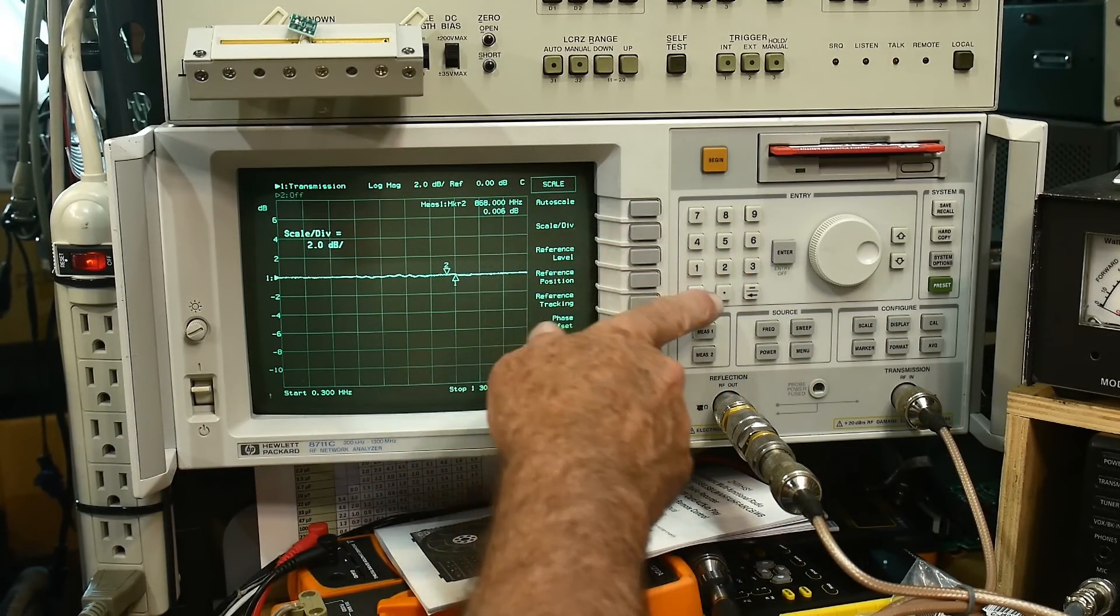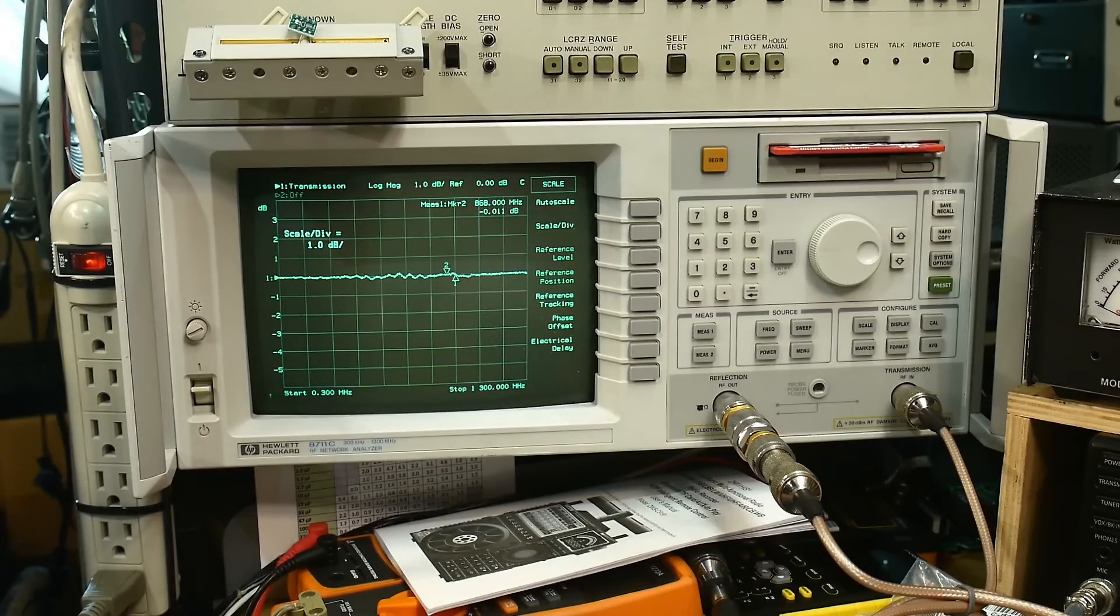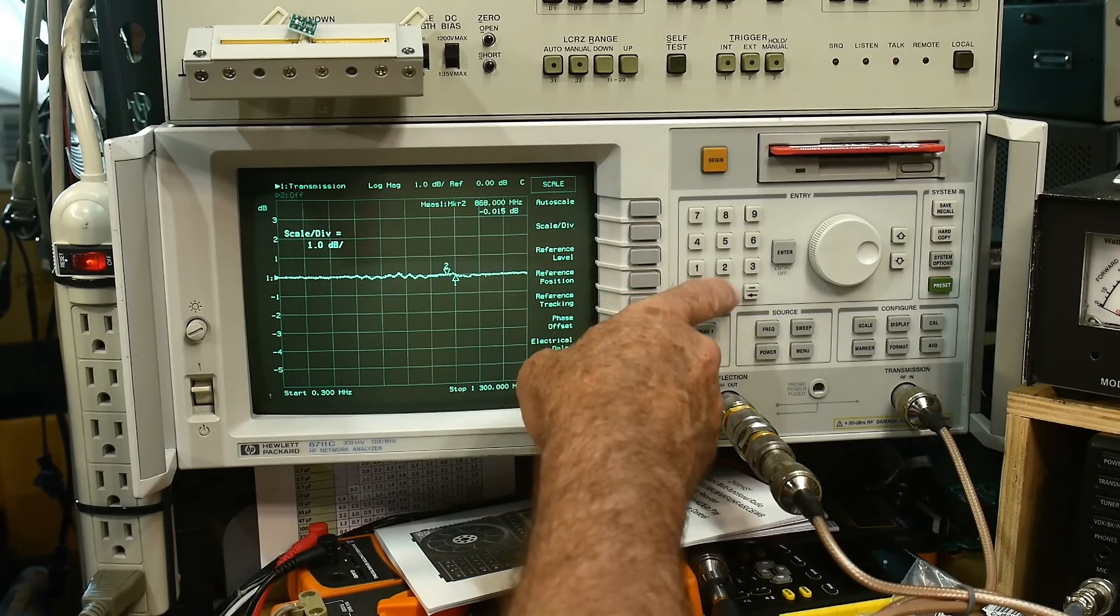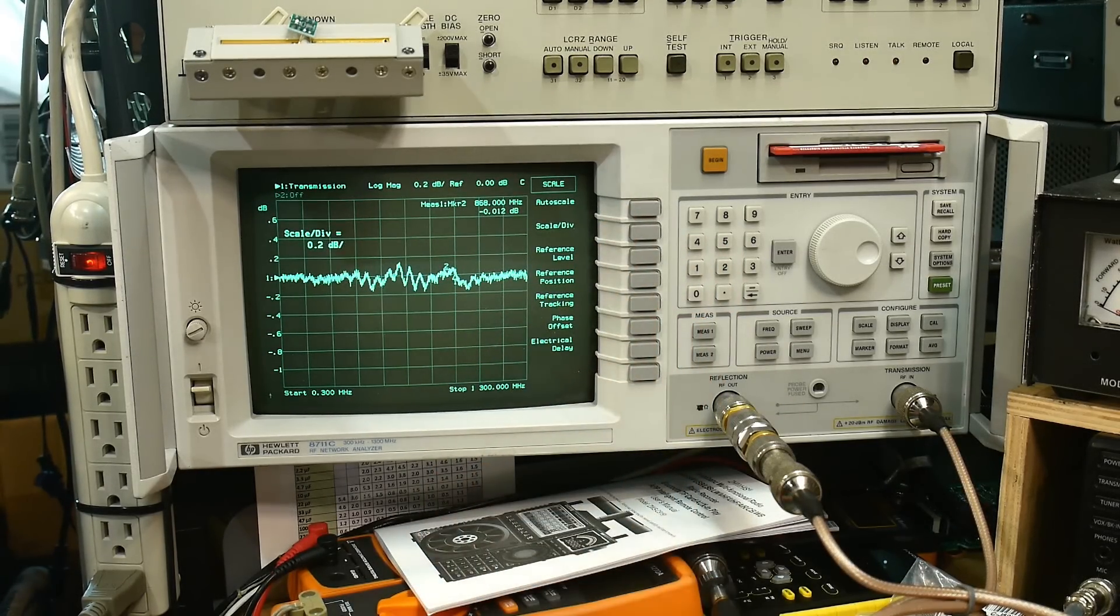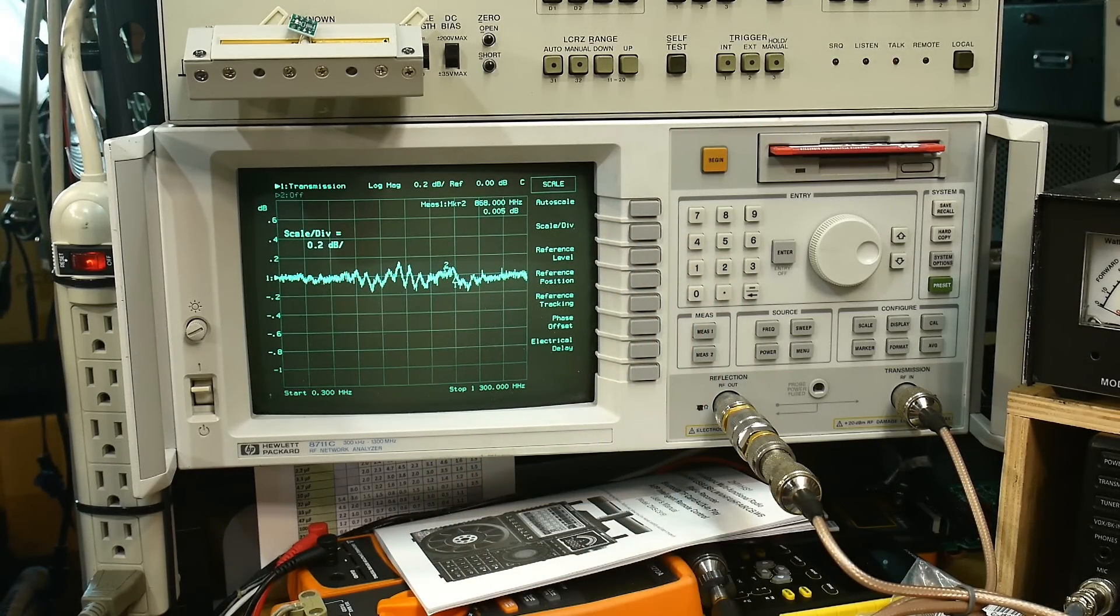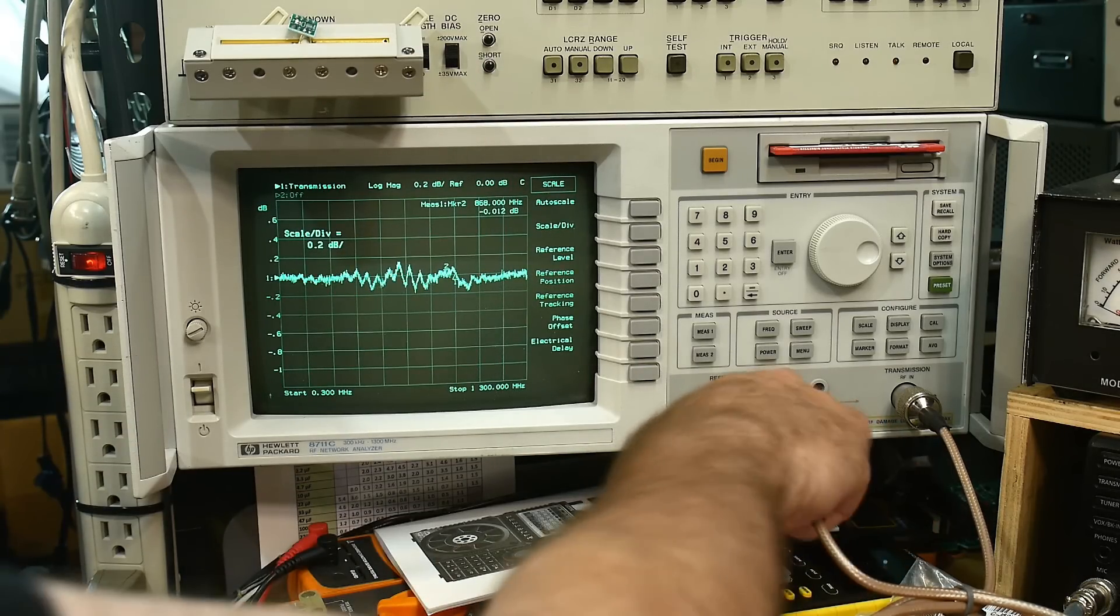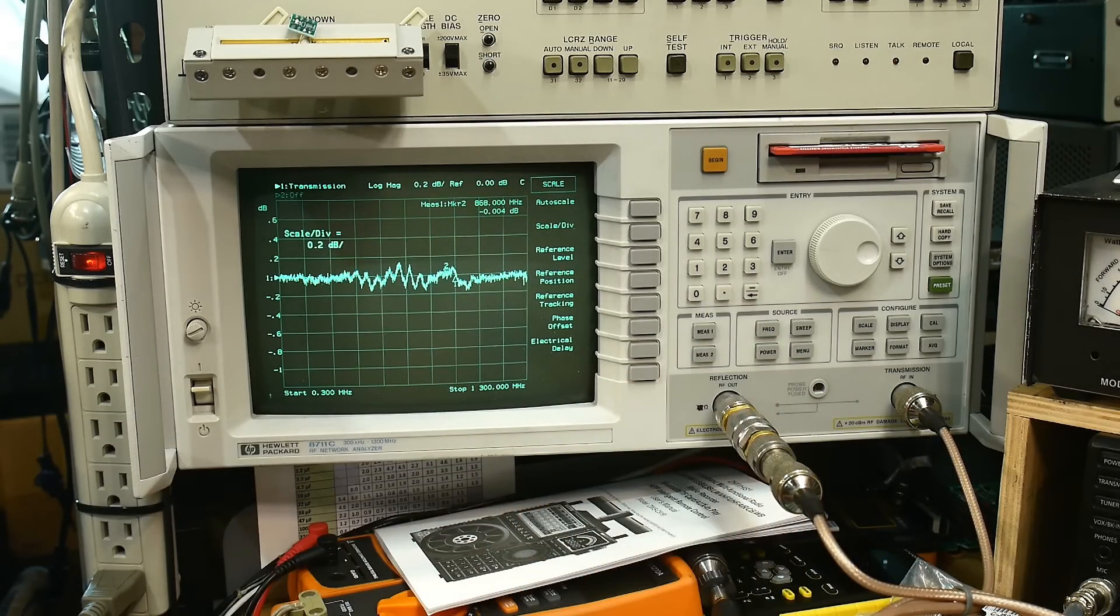And it's looking pretty good. We'll do scale 1dB per division, scale of 0.2dB division. Yeah, so about 0.1dB, little ringy stuff, and you can just imagine that just, who knows what's causing that, but I don't think it's those APC 7s causing it.